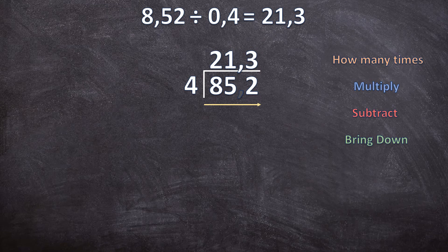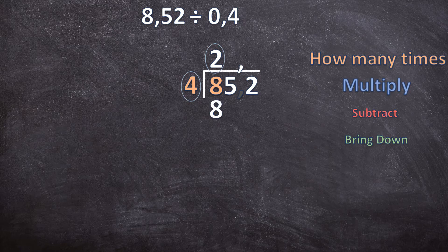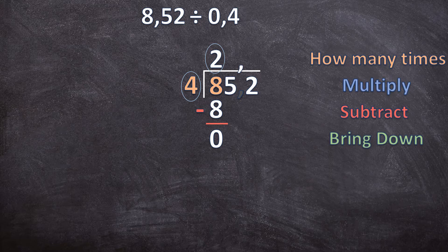I'll take away the answer and we'll do this problem together. Step one: how many times does 4 go into 8? Four goes into 8 two times. Step two — multiply: 2 times 4 is 8. Step three — subtract: 8 minus 8 is 0. Step four — bring the next digit down.